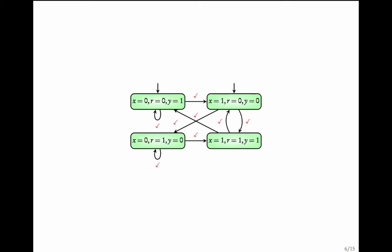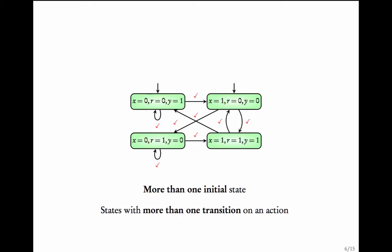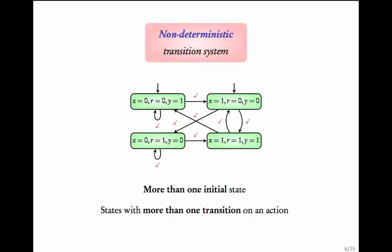There are two observations about this transition system. First, there are two initial states — more than one. Second, there are states from which there are more than one transition on an action. For example, on a tick, you can go to one state or another — there is some arbitrariness in the choice. This kind of transition system is said to be non-deterministic.